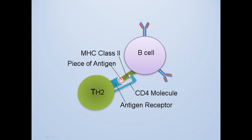The T-cell uses its TCR, the antigen receptor, to recognize the piece of antigen being presented. Once the T-cell binds to the B-cell, it releases interleukin which will activate the B-cell to proliferate.